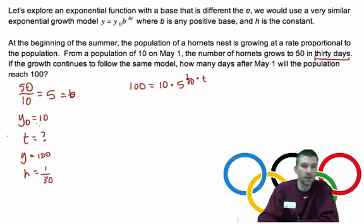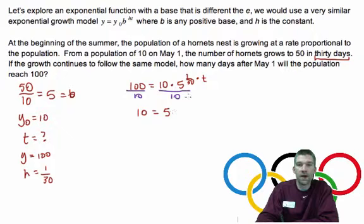All right. T is what we're interested in. So, divide both sides by 10. And when you divide both sides by 10, you get 10 equals 5 to the T over 30th power.